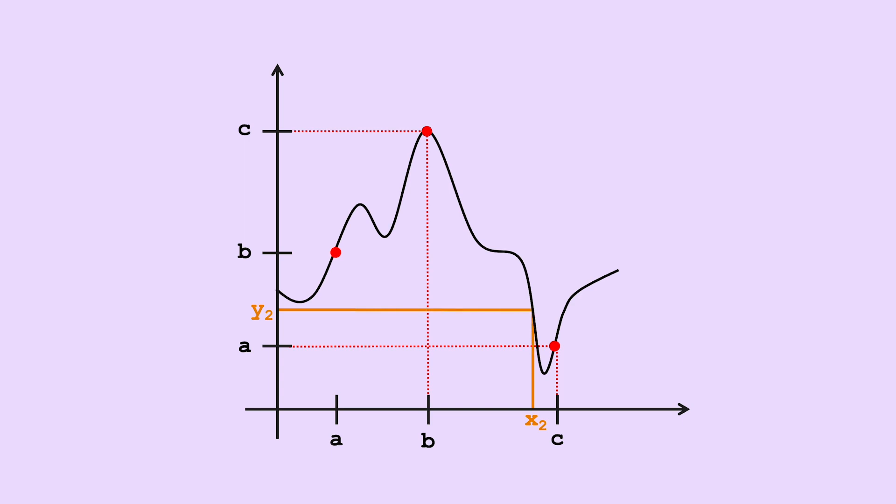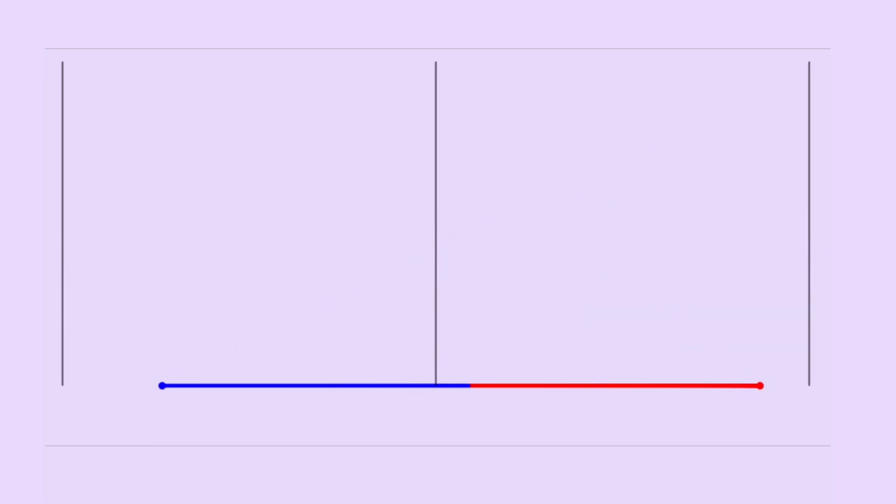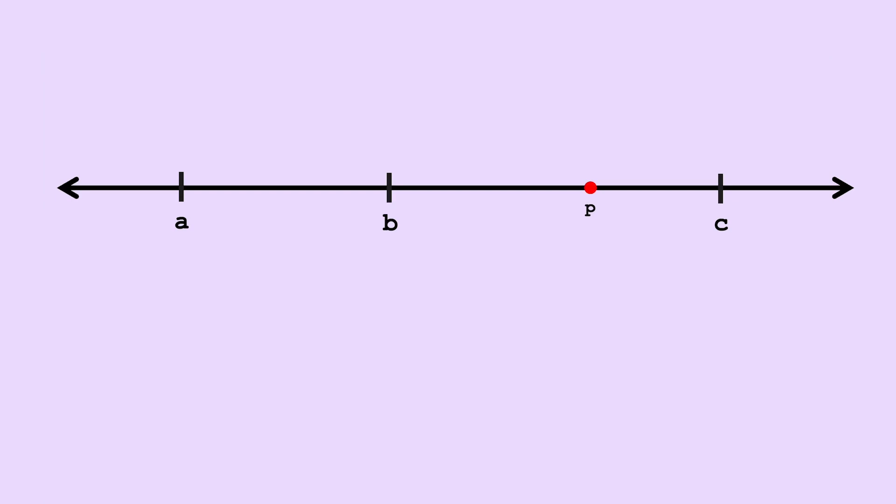You may recognize this as an intermediate value theorem, which we'll see in more depth in a few moments. Importantly, because the second interval wraps over itself as we apply f, we can notice there must be some points in bc that stay in bc after applying f to them.